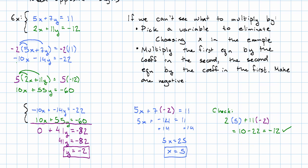So, if we can't see what to multiply by, we can always pick something to multiply by by swapping the coefficients. How do we know that we've done it wrong, how do we know that we picked the wrong thing to multiply by? Simply put, if no variable cancels out when you add, try again. If no variable cancels out, the number you chose to multiply by didn't work. So, you should try a different number.